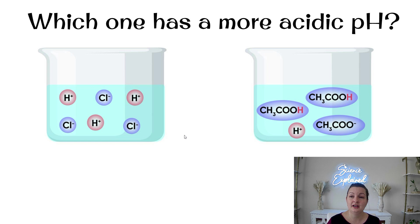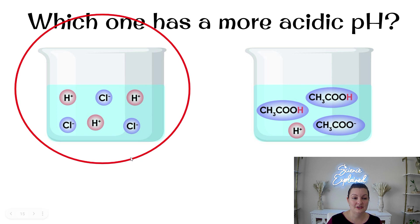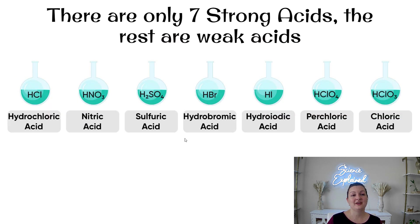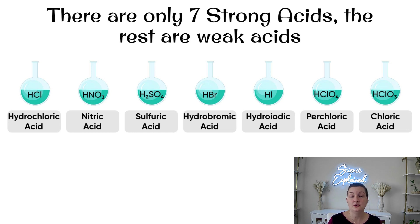So which one has a more acidic pH? If one has dissociated more, it is definitely going to have the lower pH — more acidic — because it contains more H positive ions. There are only seven strong acids that you need to know; all the rest we can consider weak acids. Pause this video to write down the chemical formulas and names — these are just ones to memorize.